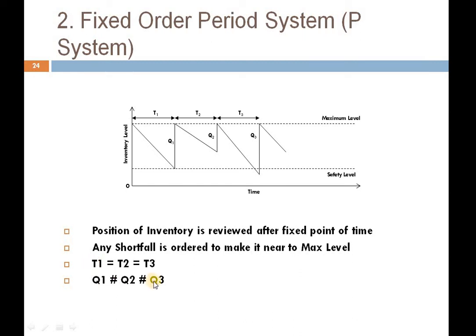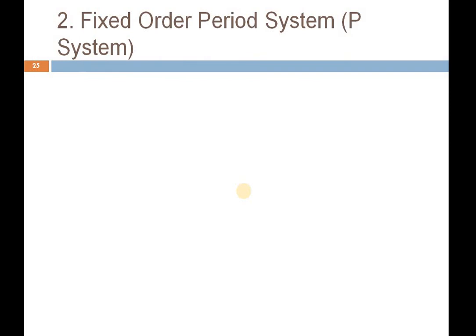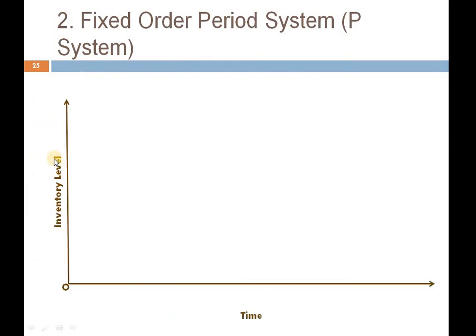So the logical concept is: time will not change, whereas quantity may increase or decrease — quantity may change. As we saw the working diagram for the fixed order quantity system in the previous video, we will similarly see the working of the fixed order period system, also known as the P-system. On one axis we have inventory level, on the other axis we have time.